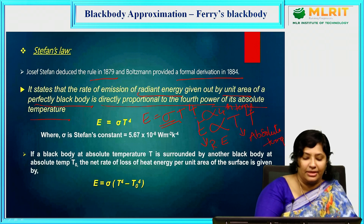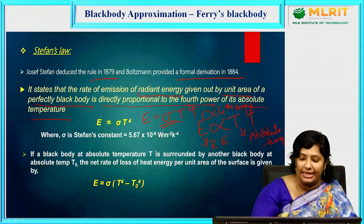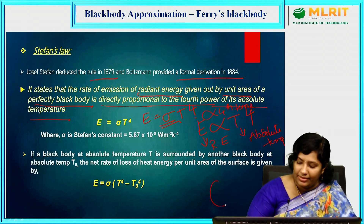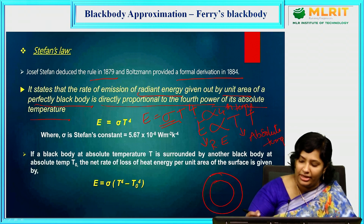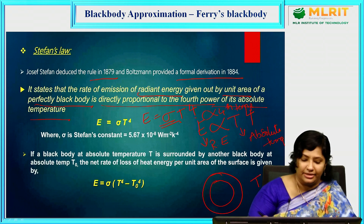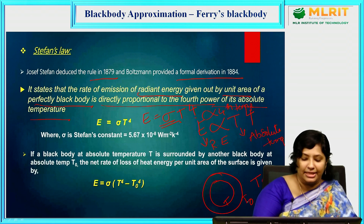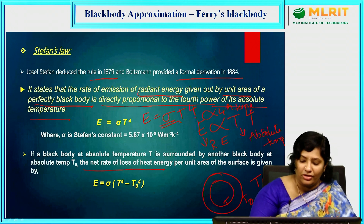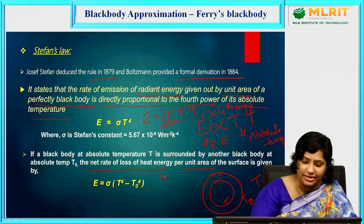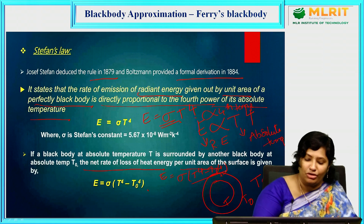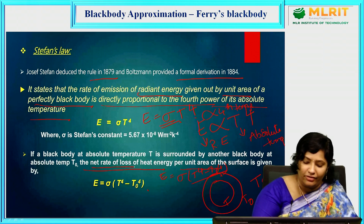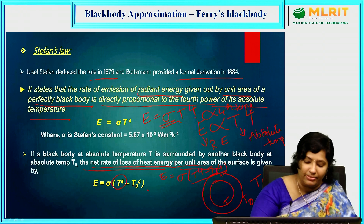If a blackbody at absolute temperature T is surrounded by another blackbody at absolute temperature T₀, then the net rate of loss of heat energy per unit area of the surface is given by E = σ(T⁴ − T₀⁴), where T is the temperature of the inner blackbody and T₀ is the temperature of the surrounding blackbody.